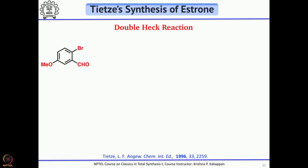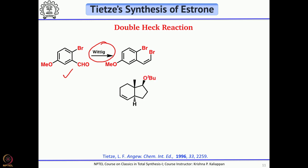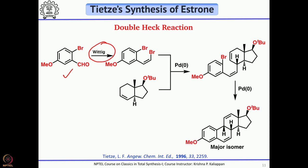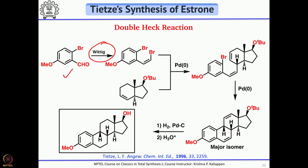For the other starting material, you start from the corresponding commercially available aldehyde and do a Wittig reaction to get the corresponding cis vinyl bromide. Then you take this and combine it with the previously prepared compound to do the double Heck reaction. The first Heck gives the first product, and the second Heck gives this compound as the major isomer. Then hydrogenation followed by oxidation gives the corresponding estrone.